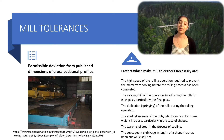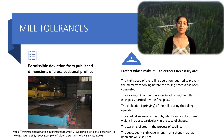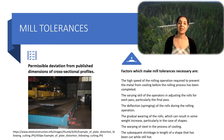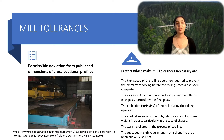Mill tolerances are the permissible deviation from published dimensions of cross-sectional profiles. The factors responsible for mill tolerances include: the high speed of rolling operations required to prevent cooling before rolling is complete, varying skill of operators especially during final rolling, deflection of the rolls during rolling, gradual wearing of the rolls which can result in weight gain, warping of steel during cooling, and shrinkage in length of shapes cut while hot.